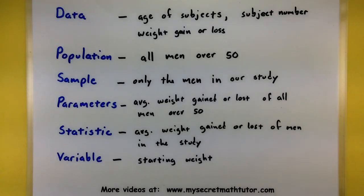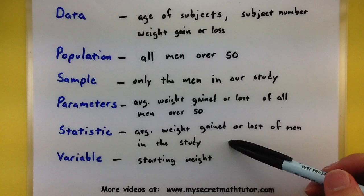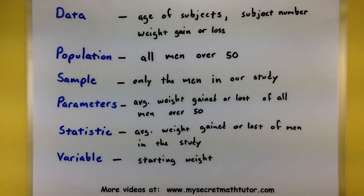There we go. So now we have an example of some data for our study. What is the population and what's the sample? As well as some parameters. And you can see that for the parameters, it affects the population. And for the statistics, we're only talking about the sample. And of course, variables that would change from subject to subject in the study. Well, I hope this helps out. Thanks for watching.